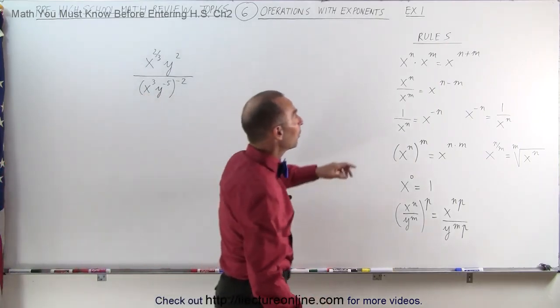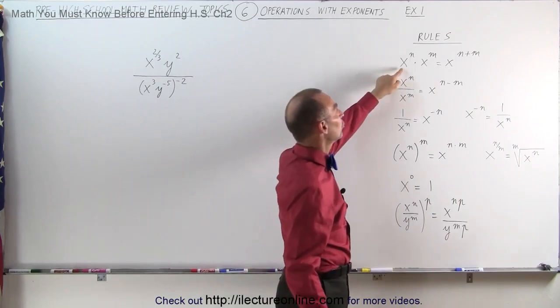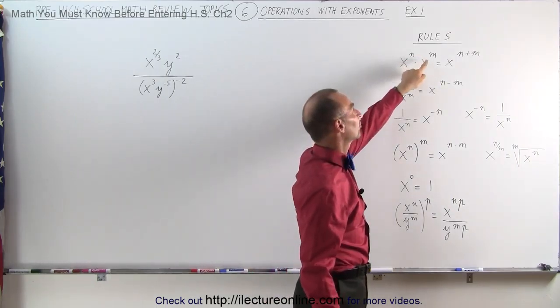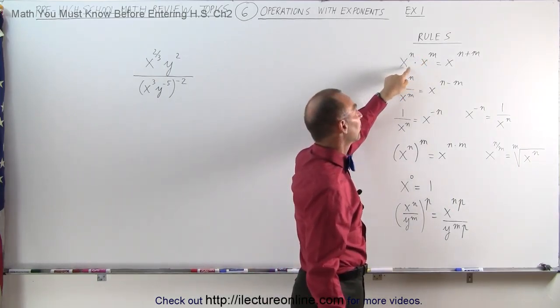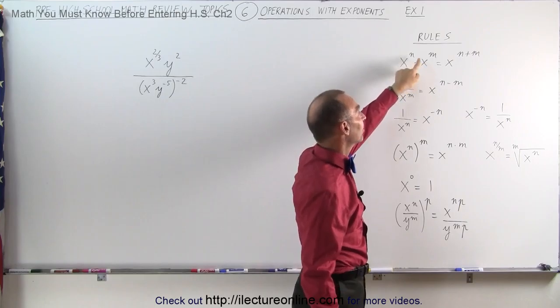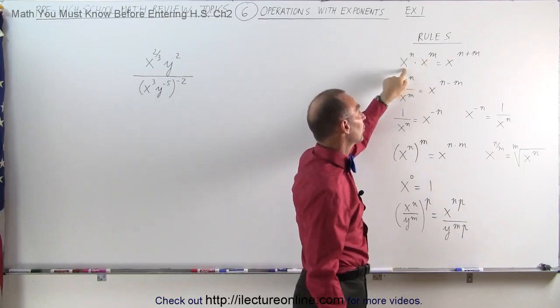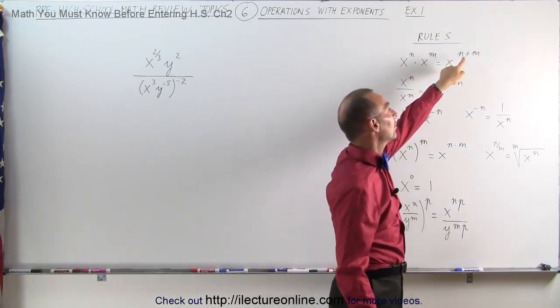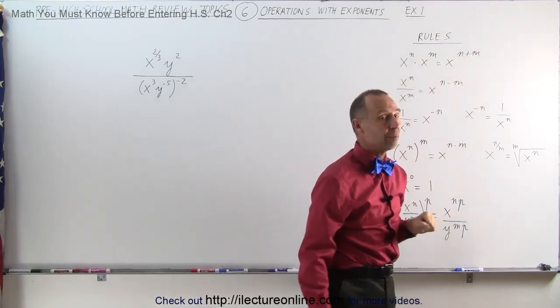For example, when you multiply two numbers together that have different exponents but the same base — this is called the base and this is called the exponent — the result is equal to x to the sum of the exponents.